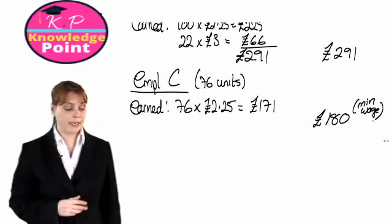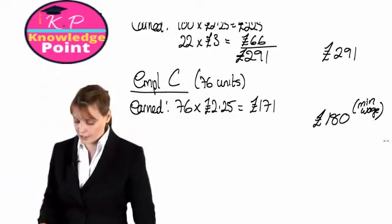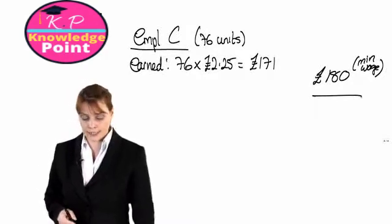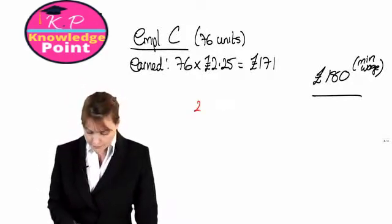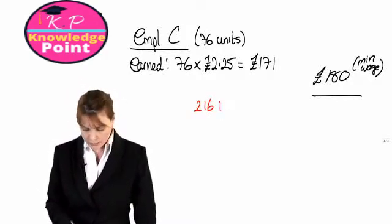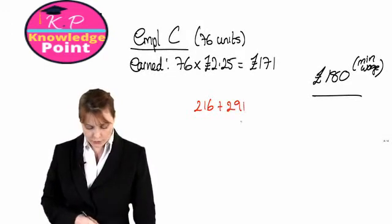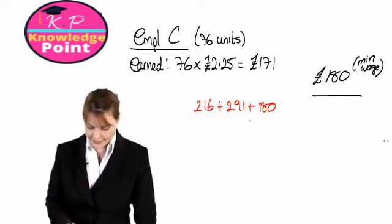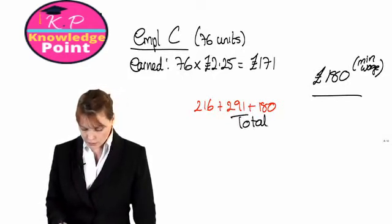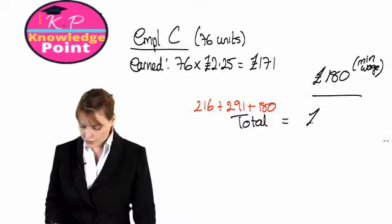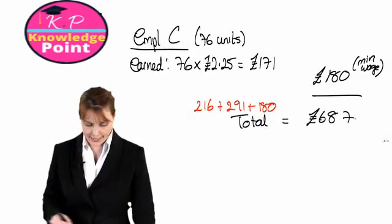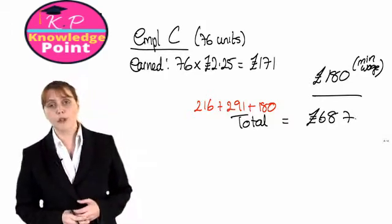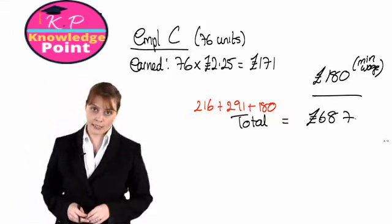So the total wages for each of the three employees, if we just sum them together: We have £216 for employee A, plus £291 for employee B, plus the £180 for employee C. So our total is equal to £687. Moving on to our next section.